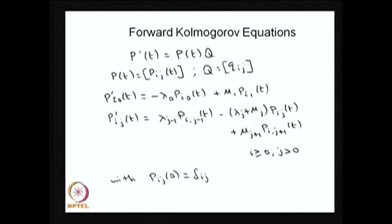For all other equations, either the system comes from the previous state with rate lambda(j−1), or it comes from the next state with rate mu(j+1), or it does not move anywhere. With these three possibilities there are three terms on the right-hand side, and that is the net rate for any state j.